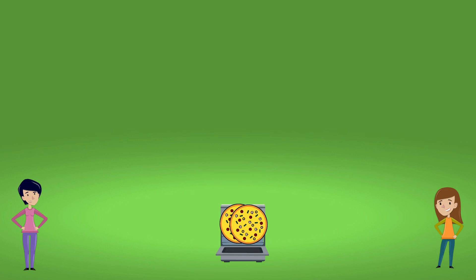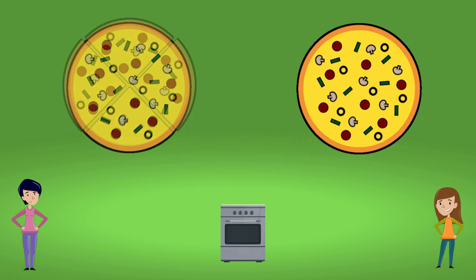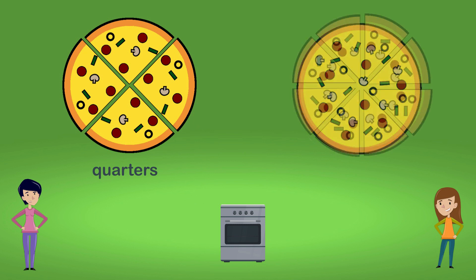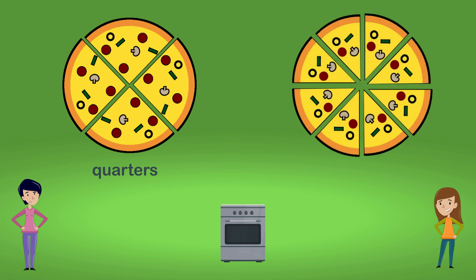Take this example. Sam and Lily cook two pizzas. Sam cut hers in four equal pieces, quarters. Lily cut hers in eight equal pieces, eighths.